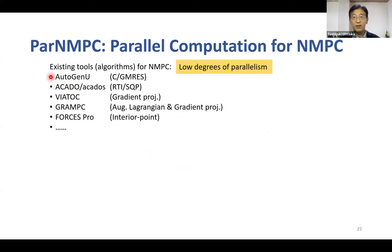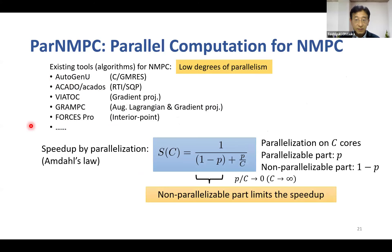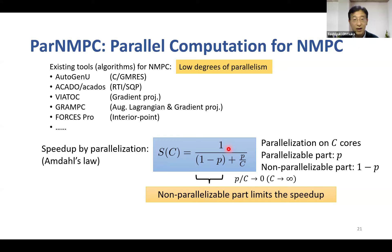ParNMPC is a toolkit for parallel computation for NMPC. Since parallel computation can only reduce computation time of the parallelizable part, its speed-up is essentially limited by the non-parallelizable part no matter how many cores you have, which is an important implication of Amdahl's law. So we want to find algorithms to make the parallelizable part as large as possible.